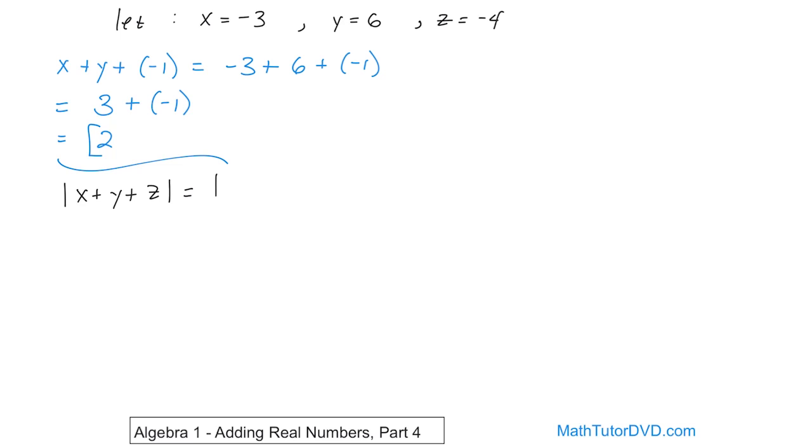Well, the first thing you'd have to do is plug again. So x is negative 3 plus y, which is 6, plus z, which is negative 4.